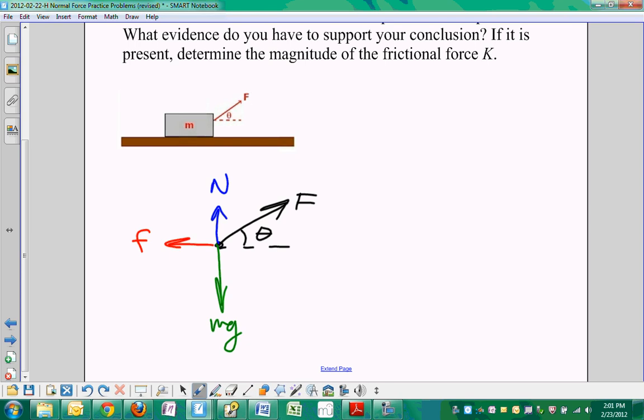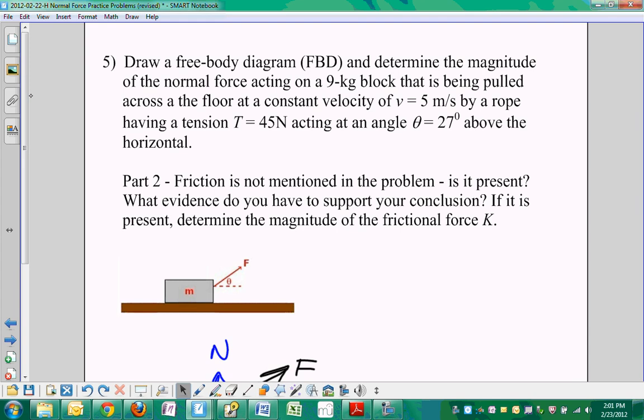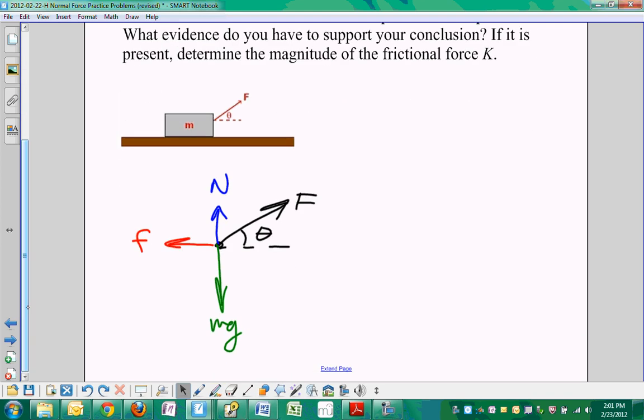Okay, now if we know that the net, if we know that it's moving at a constant velocity, which it says right here, five meters per second, that means that we know that the net force is equal to zero. So the overall net force is equal to zero. That means that net force in the X direction is equal to zero, and net force in the Y direction is also equal to zero.